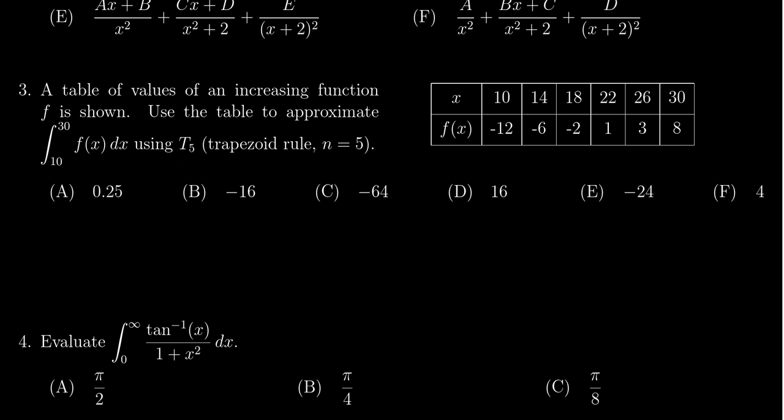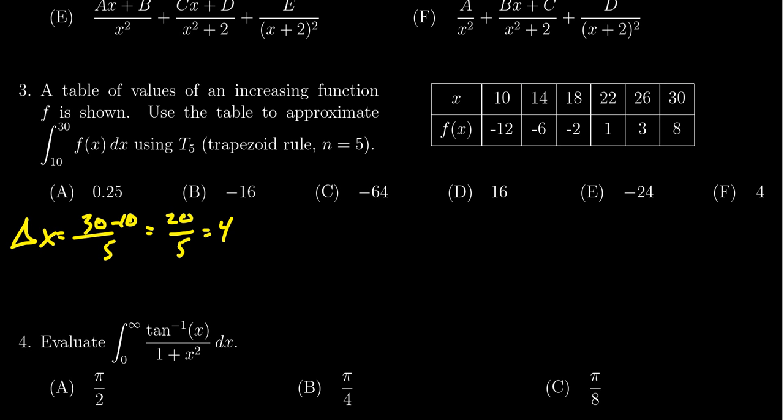Let's first calculate what delta x looks like in that situation. Delta x would equal 30 minus 10 over five, so we end up with 20 over five. Delta x is four. Notice that the table's already set up this way. For all tests, it might not be so simple, but this one does increment by four like so.